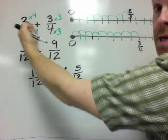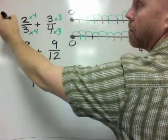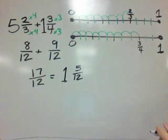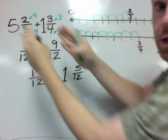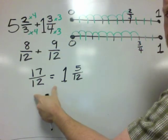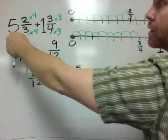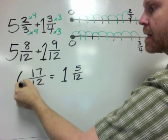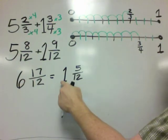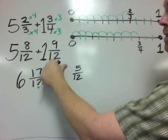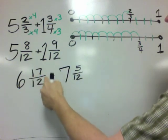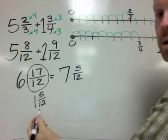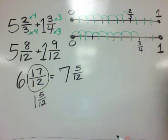Now if these were mixed numbers — meaning we have some whole number — all you do is temporarily ignore the whole numbers, add the fractional pieces, and we get 1 and 5 twelfths. But now we do have to remember that there was a 5 and a 1 here. So this becomes 6 and 17 twelfths, which makes this a 7 — because this piece right here is equal to 1 and 5 twelfths, plus the original 6 gives us 7 and 5 twelfths.